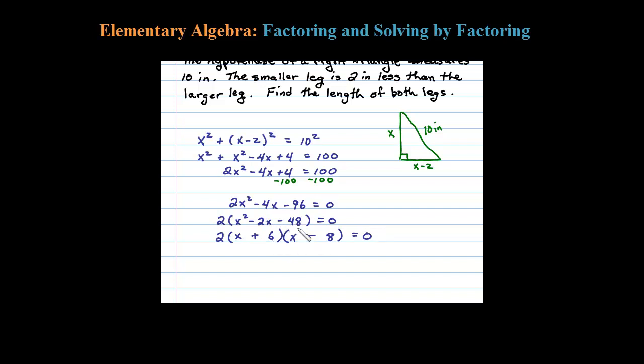The next step is to set each variable factor equal to 0. Let's not worry about the 2. So X plus 6 equals 0 or X minus 8 equals 0. This tells me X could equal negative 6 or X could equal 8. Now it doesn't make sense for the length of a side of a triangle to be negative, so let's throw that away and use X equals 8.